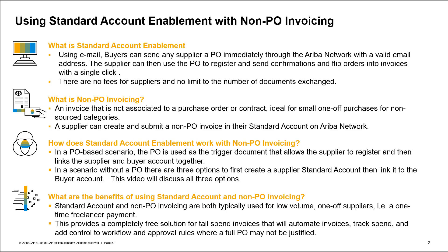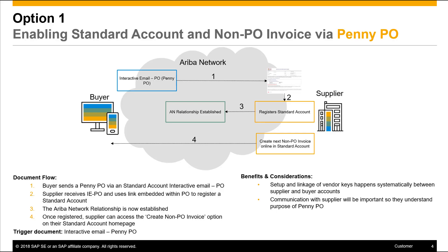Now we will go through the three options available to enable a standard account supplier when there is no PO as the trigger document to systematically link the buyer account to the supplier account. Option one is to use a penny PO. The penny PO acts as a dummy PO in order to link the supplier and buyer account together without actually making a purchase.